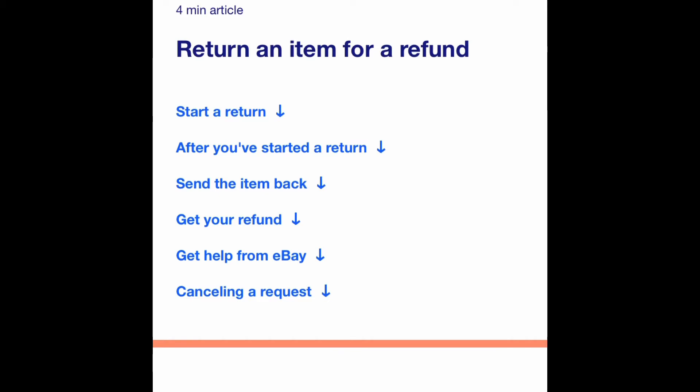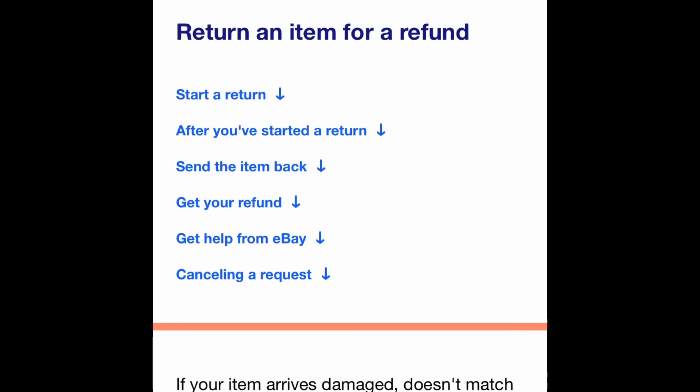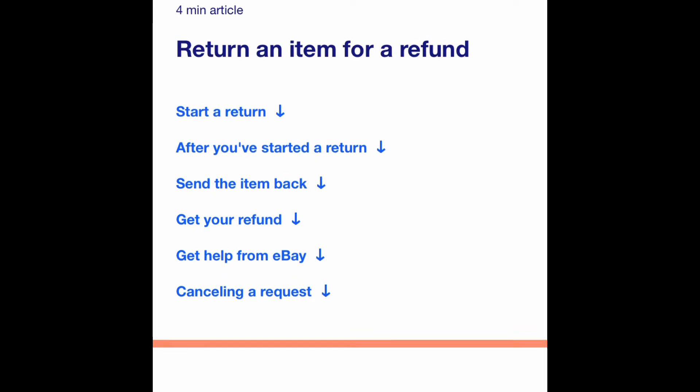Generally when you sell an item, I don't allow refunds or returns, so buyers have to decide within three days. Even though I don't offer refunds, they still have three days to review the item and make sure it complies with the description. If it matches or doesn't match the description, they can still return it even if the seller doesn't accept returns. When the buyer requests a return, eBay starts the process and sends a notification to the seller.